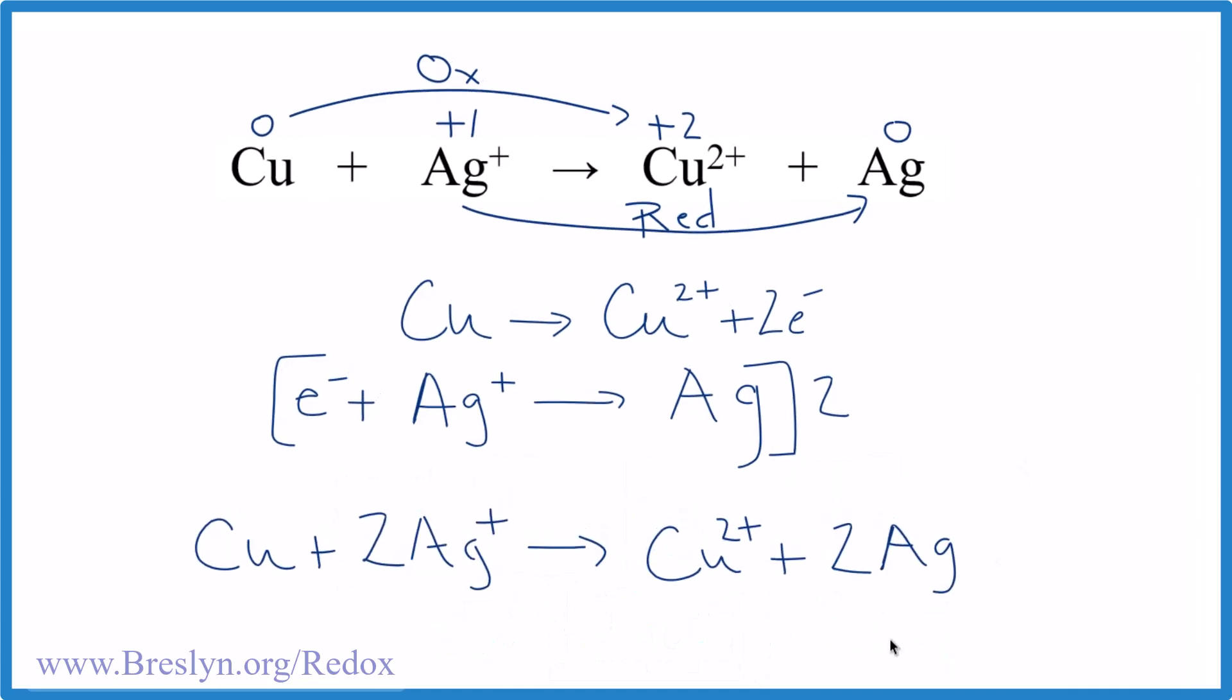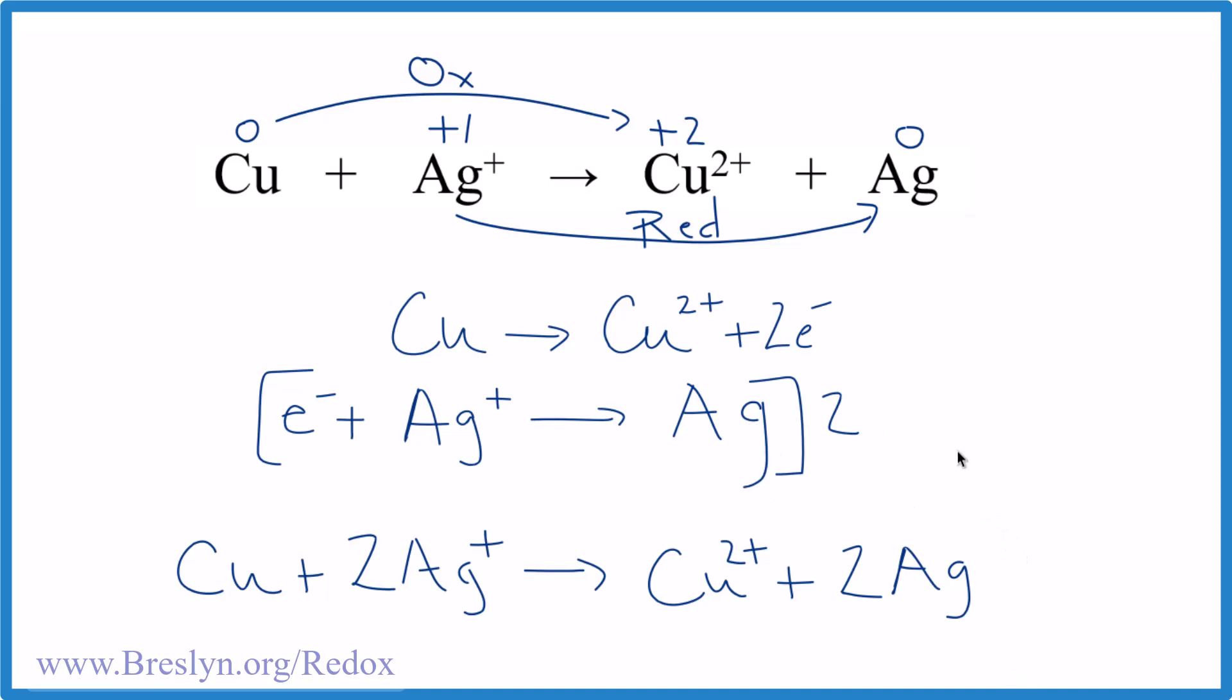You could write the states in if you want. And we're done. It's balanced. Check the atoms and the charge. Copper, copper, two silvers, two silvers. We have two times one plus, that's two plus. Two plus over here. We're done. That's it.